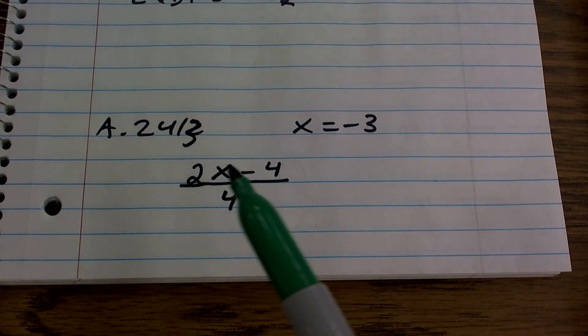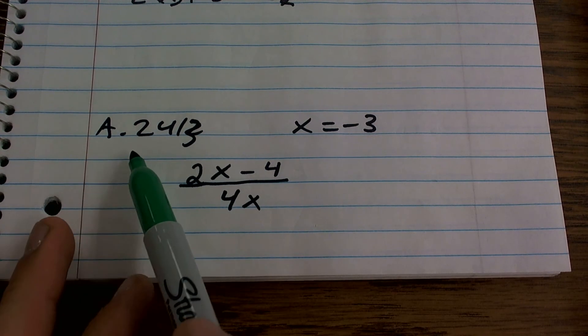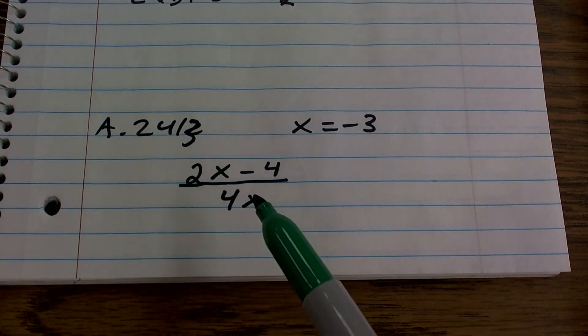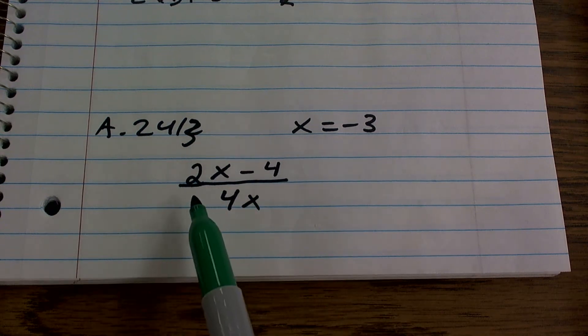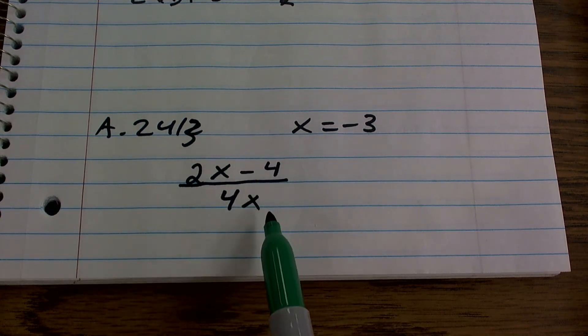So we have problem 8.2413. Those numbers mean nothing to you, I don't know why I'm telling you. But what we have here is an expression: 2x minus 4, all divided by 4x.